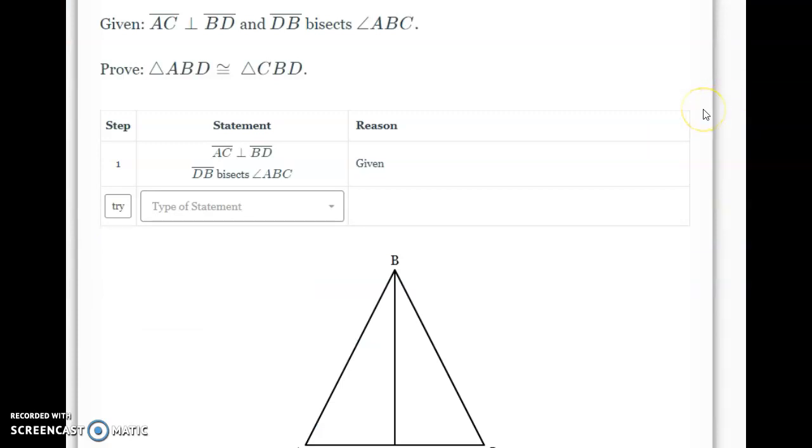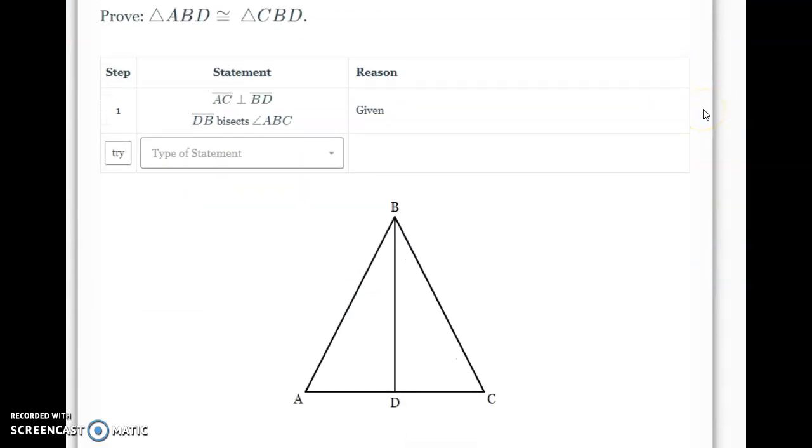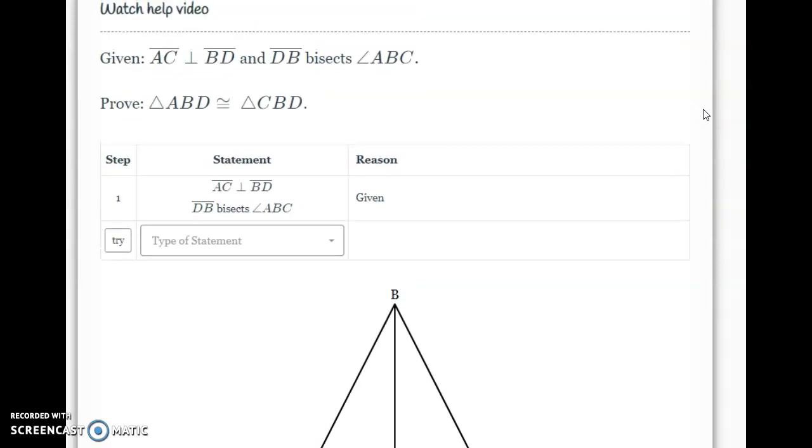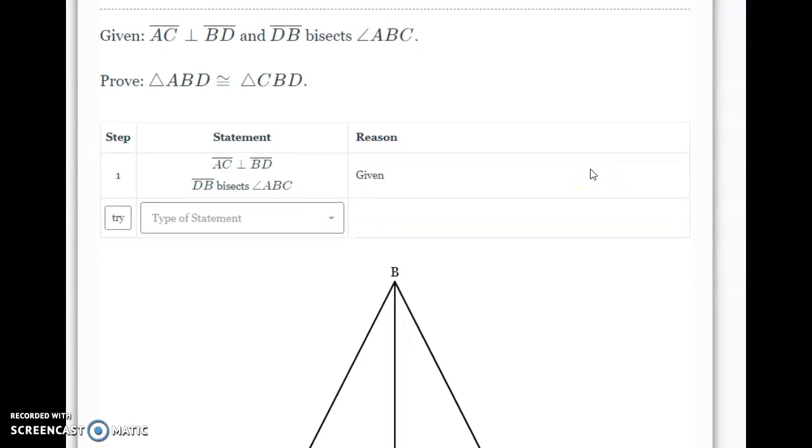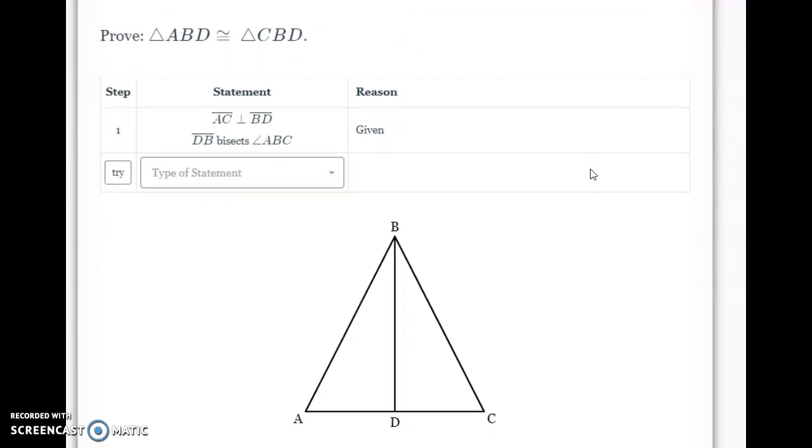I'm given that segment AC is perpendicular to BD, and I'm told that DB bisects angle ABC. And then I want to prove that triangle ABD is congruent to triangle CBD. Again, they do the first step for you with your given statements. If I put my cursor over these two things, it will highlight them on my diagram for me.